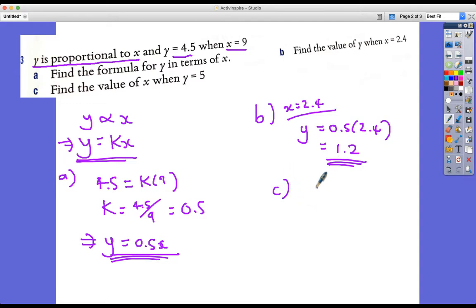And C, find the value of X when Y is 5. All this time, we're going to use the same thing. 0.5X. And so Y is 5, 0.5X. So X is 5 over 0.5, which equals 10. Perfect. So it's not too difficult.